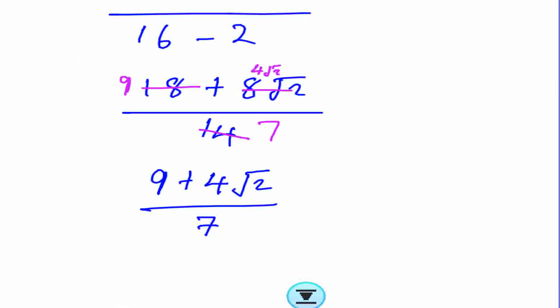So the value of a is 9, the value of b is 4, and the value of c is 7. Thank you.